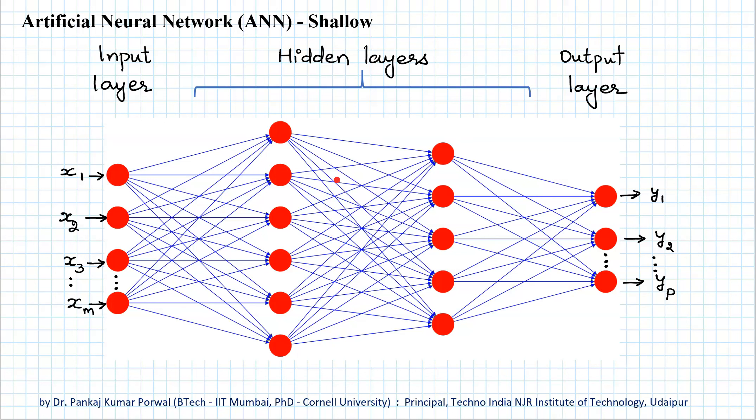By shallow, I mean they had small number of hidden layers. And by narrow, I mean each of the hidden layers had small number of nodes.